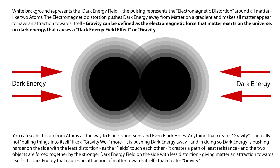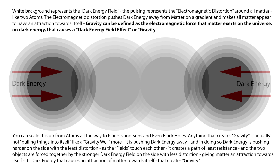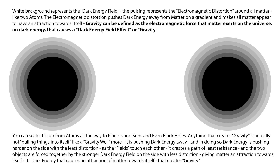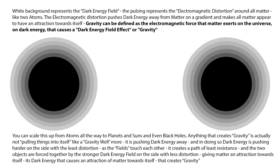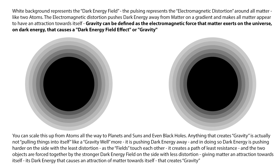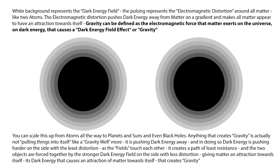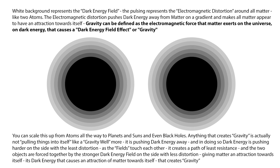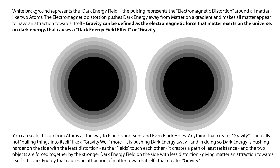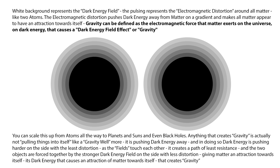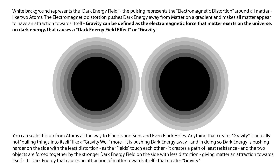You can scale this up from atoms all the way to planets and suns and even black holes. Anything that creates gravity is actually not pulling things into itself, like a gravity well. It is pushing dark energy away, and in doing so, dark energy is pushing harder on the side with the least distortion. As the fields touch each other, it creates a path of least resistance, and the two objects are forced together by the stronger dark energy field on the side with less distortion.